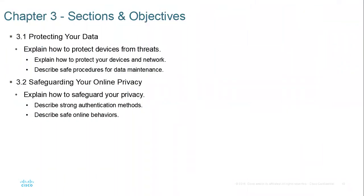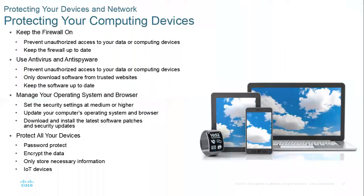We're going to be looking at protecting your data and safeguarding your online privacy. In protecting your data, you need to make sure you have a secured infrastructure and a secured system. First, firewall — you want to make sure that you have your firewalls on. Firewalls protect your website; for websites we call them WAF, Web Application Firewall. We also have those you can apply to your network and to your PCs. Then we have antivirus and anti-spyware — any anti-malware will suffice. The goal is to have something that is active, updated, and a premium version.